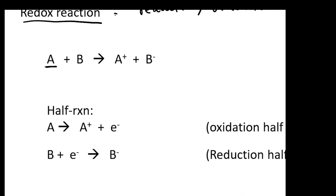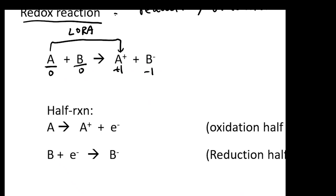What is the oxidation number of A? Zero. How about B? Zero. How about A-plus? Plus one. B-minus? Negative one. You know A becomes A-plus, so the oxidation number goes from zero to one — it undergoes oxidation. Therefore, this is actually your LoRa. It loses electrons, oxidizes, can serve as a reducing agent, and this reaction will always happen at the anode.